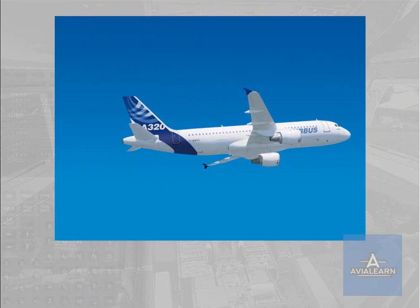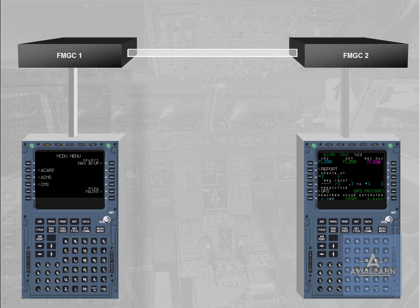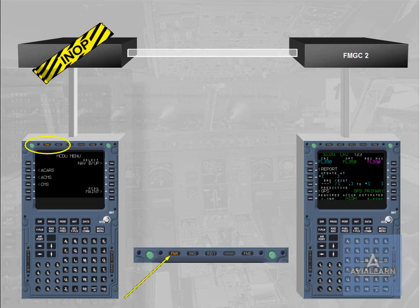Let us review the failure of one FMGC — FMGC 1, for example. Let's assume we are in flight and no previous faults have occurred. If Autopilot 1 and Autothrust were engaged, Autopilot Off and Autothrust Off are triggered. Autopilot 1 and Autothrust go off. Note: you can re-engage the Autopilot on the healthy side — in our case, Autopilot 2. If Autothrust has disengaged, it can be re-engaged at the same time. Notice the amber FM1 light on the MCDU, which indicates that the on-side FM has failed.